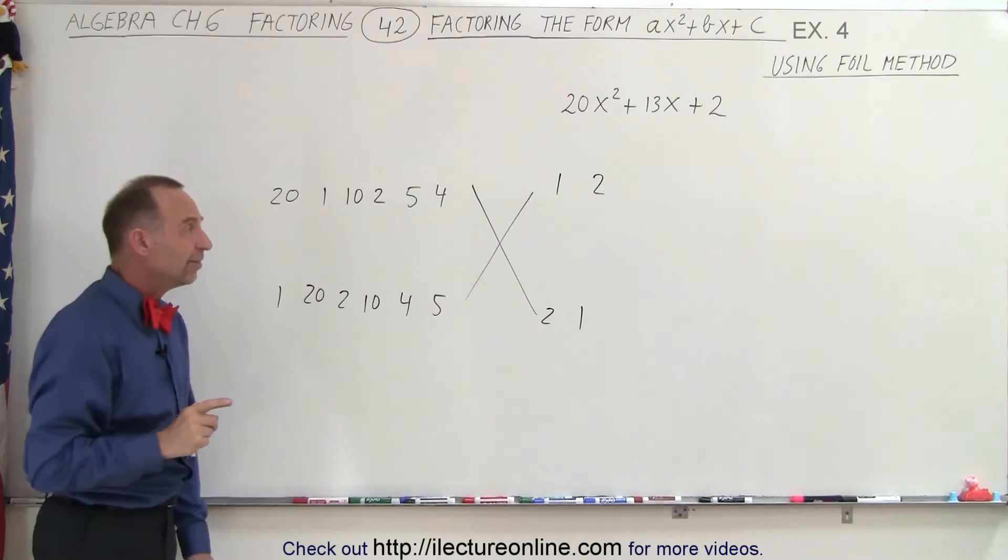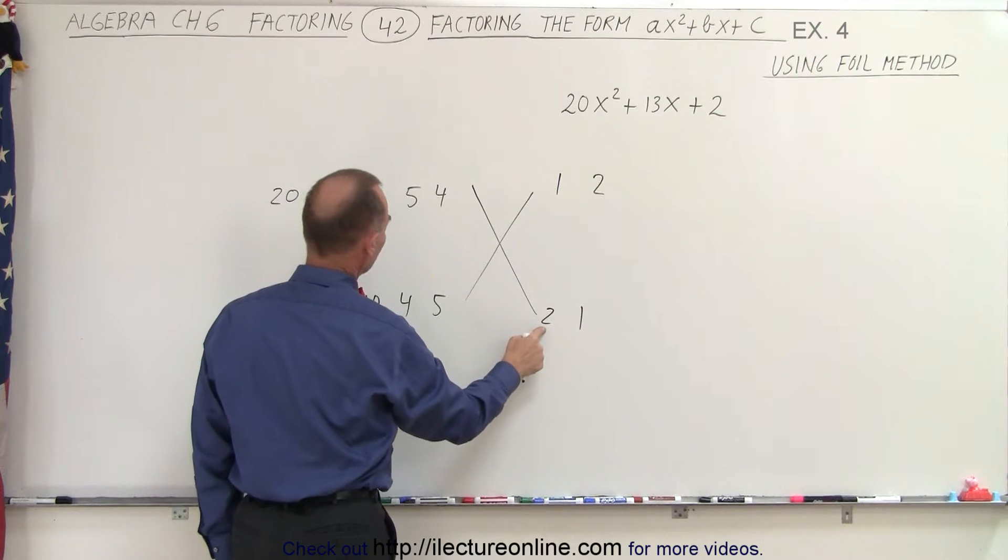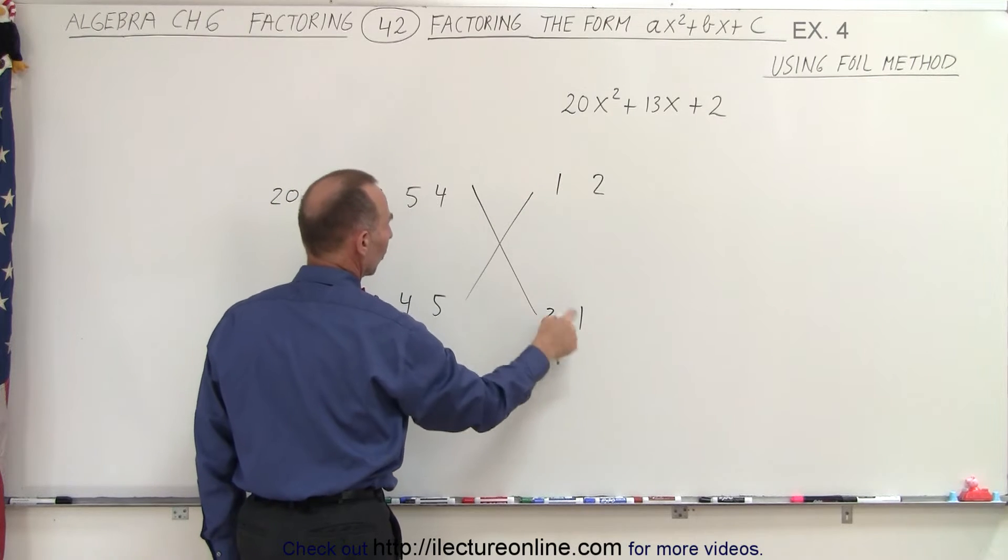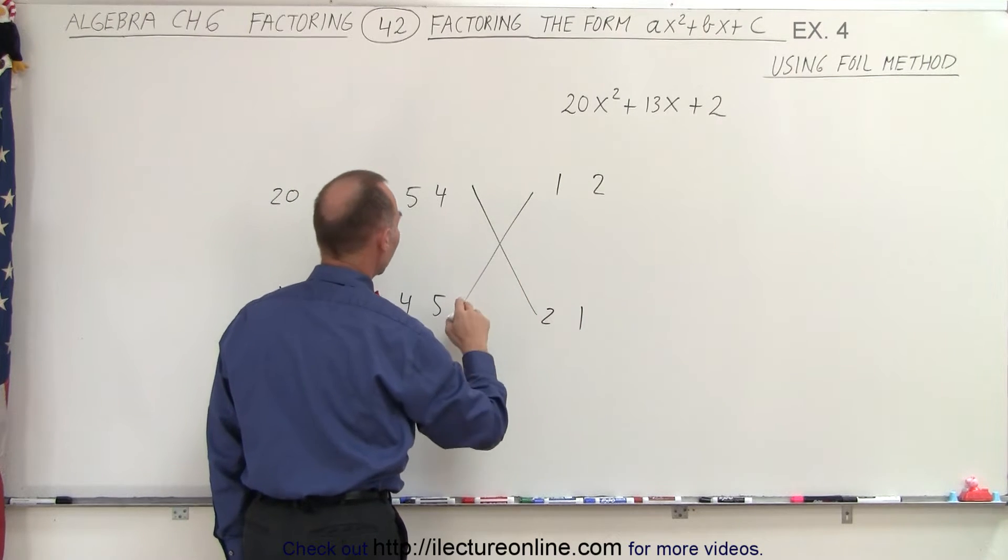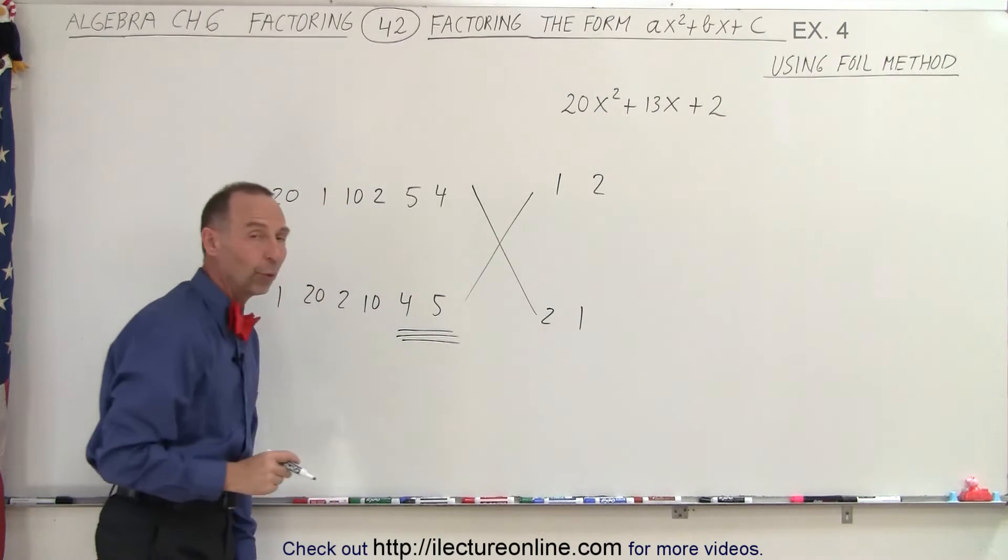So since the middle term is 13, when I multiply 10 times 2 I get 20. I multiply 10 times 1 I get 10, and 2 times 1 I get 2. So it looks like the most likely scenario is when I use the numbers 4 and 5.